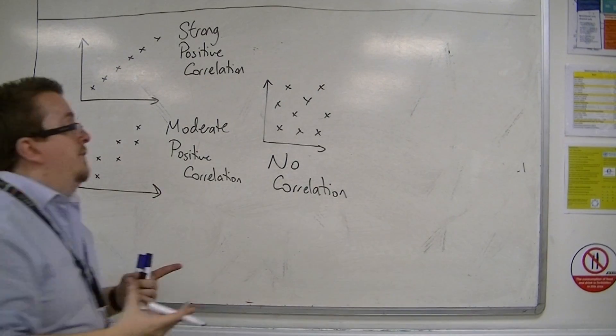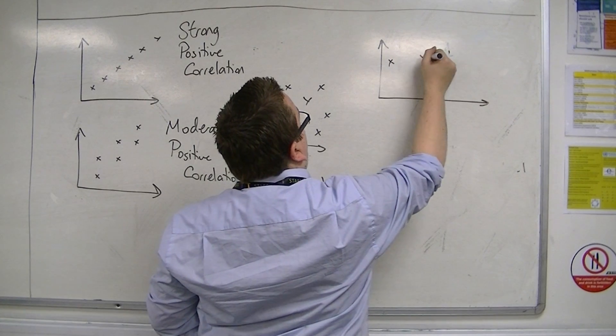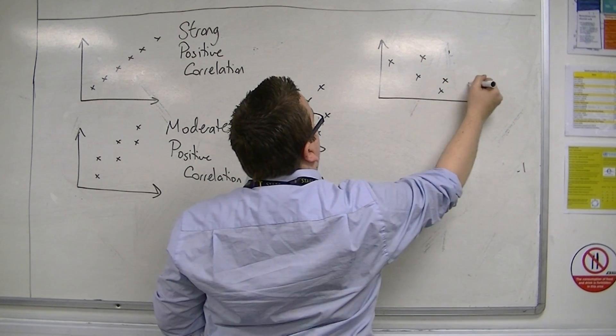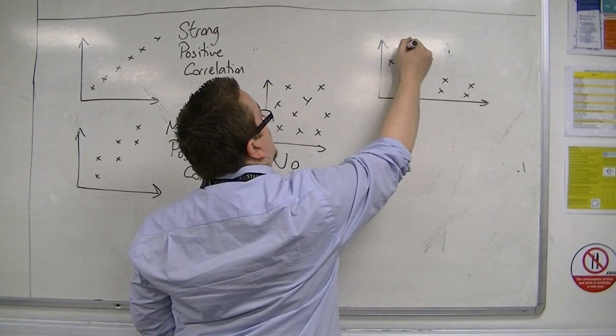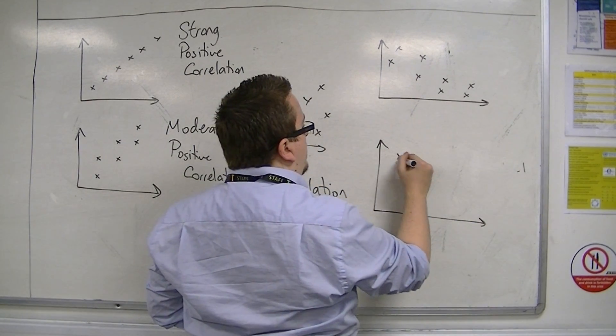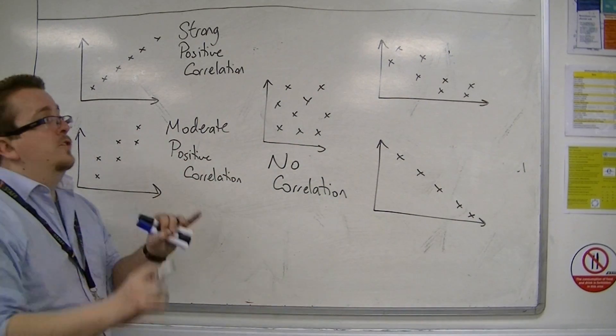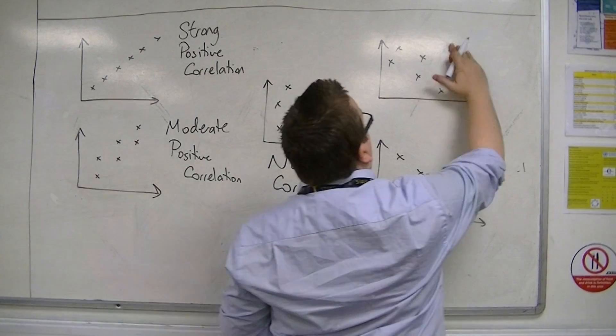And then we can have the opposite. So you can start to have points that are going from the top left to the bottom right. And if you extend that further, then you can see that you could have them in a straight line, going from the bottom left to the top right.